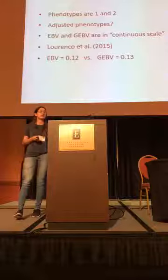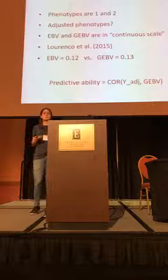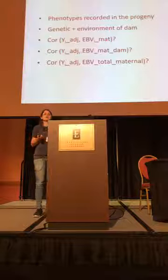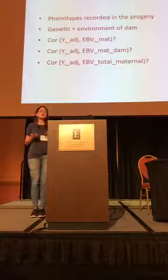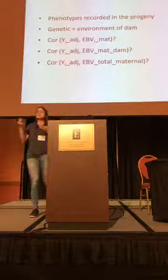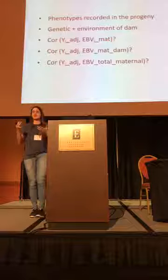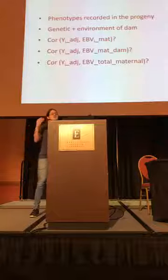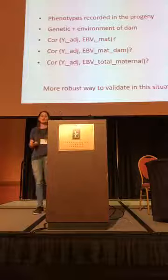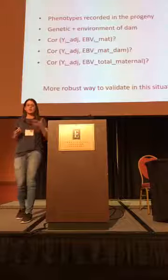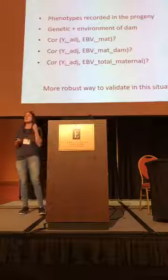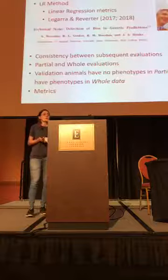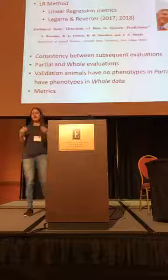Another issue was that the model has a maternal effect — so how do we validate for the maternal effect? We tried several ways: correlating adjusted phenotypes with the maternal EBV for the animal, correlating adjusted phenotypes with the maternal EBV for the dam of the animal, and correlating adjusted phenotypes with EBVs for the total term. But none of these worked well. Sometimes we think genomics is not working because the increase in predictive ability is very small, but sometimes we are not using the correct method to assess that gain in accuracy.